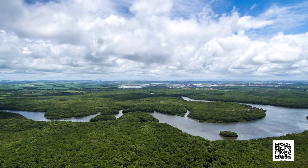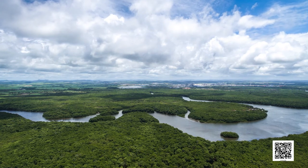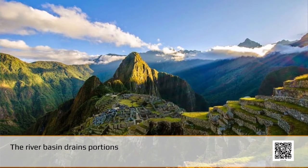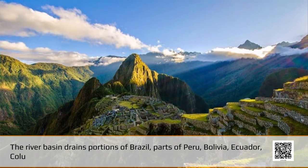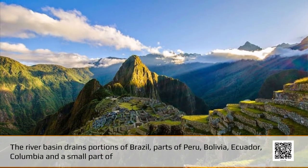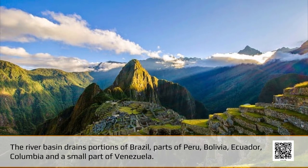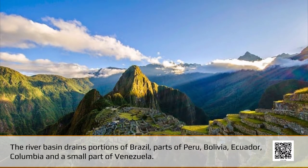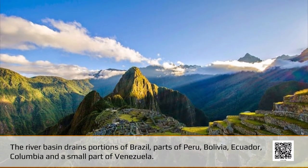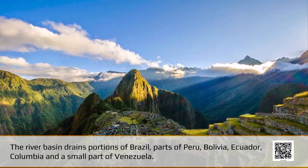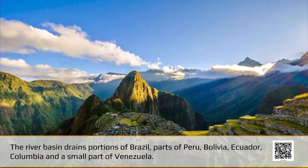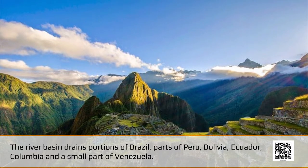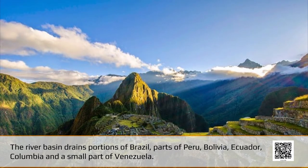The Amazon Basin is the largest river basin in the world. The river basin drains portions of Brazil, parts of Peru, Bolivia, Ecuador, Colombia, and a small part of Venezuela. Children, can you name the countries of the basin through which the equator passes?